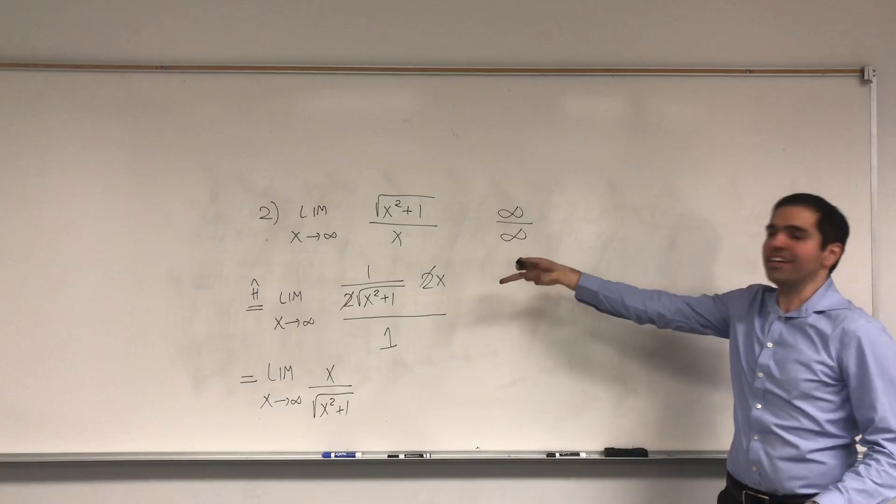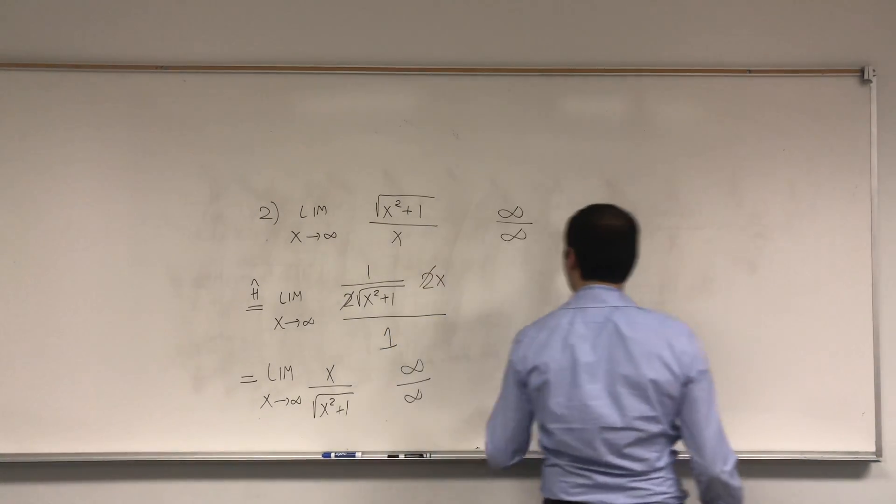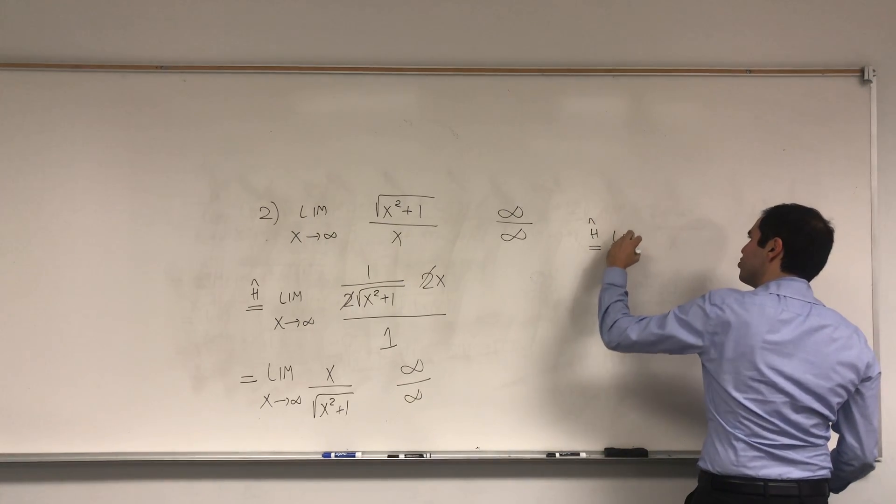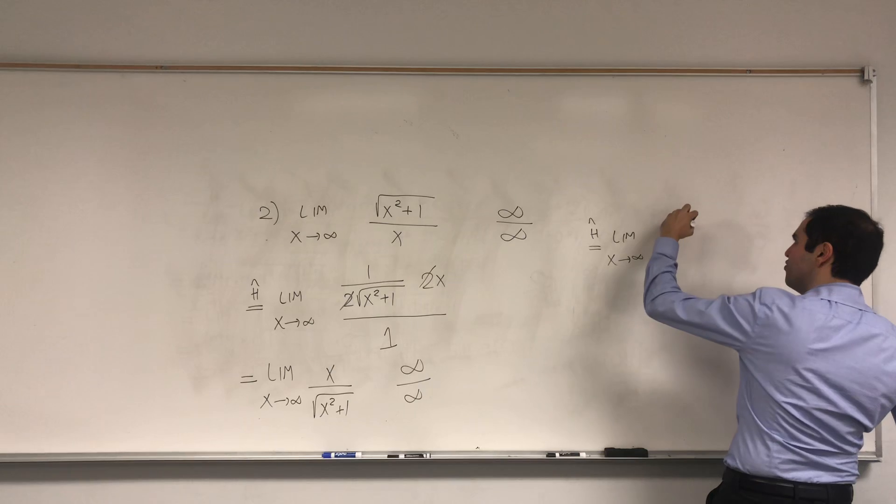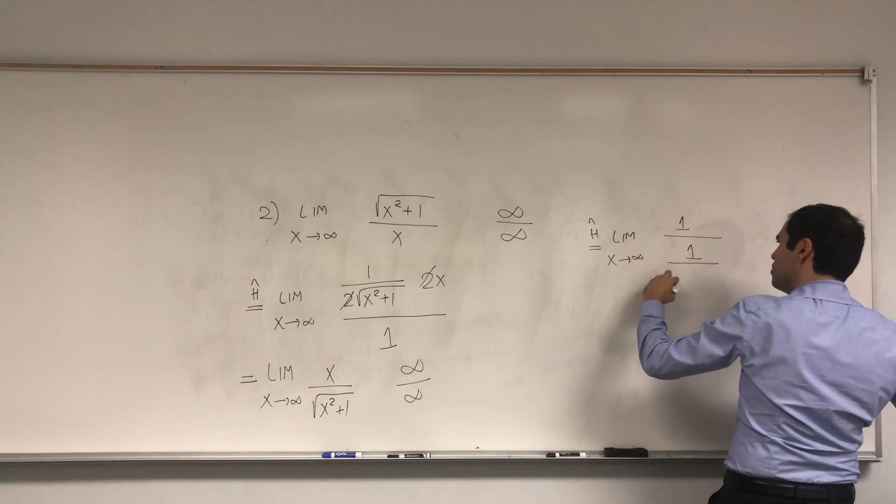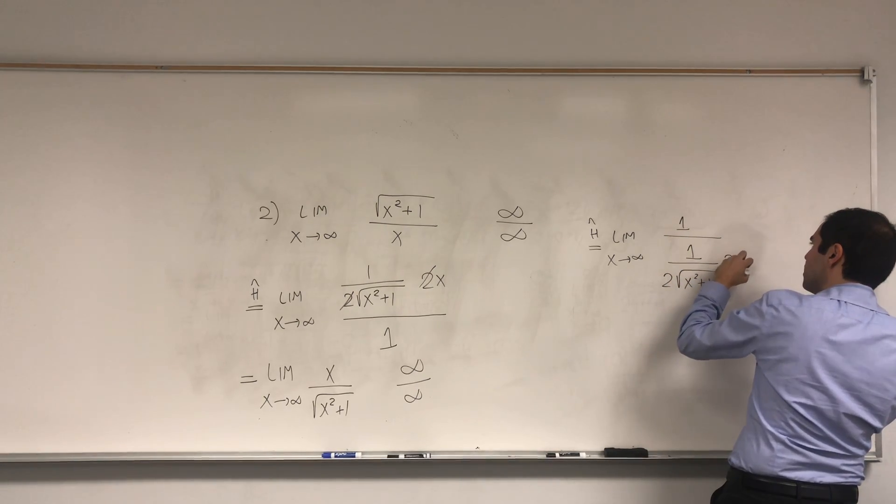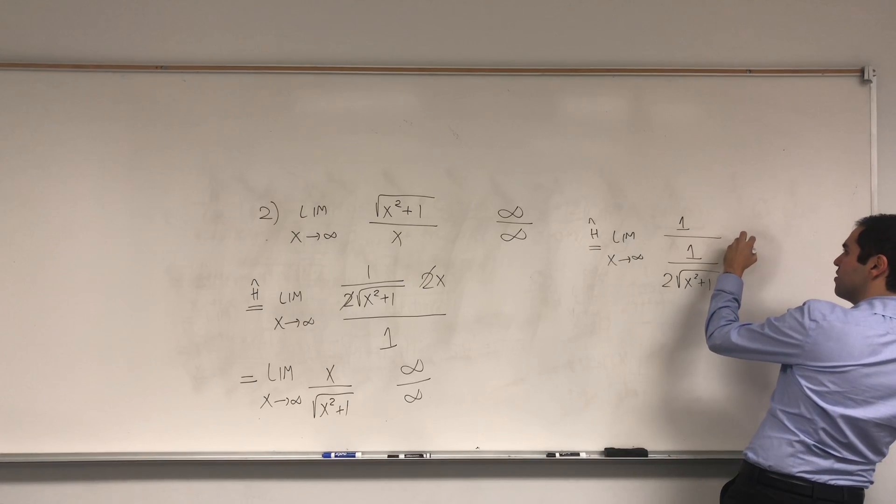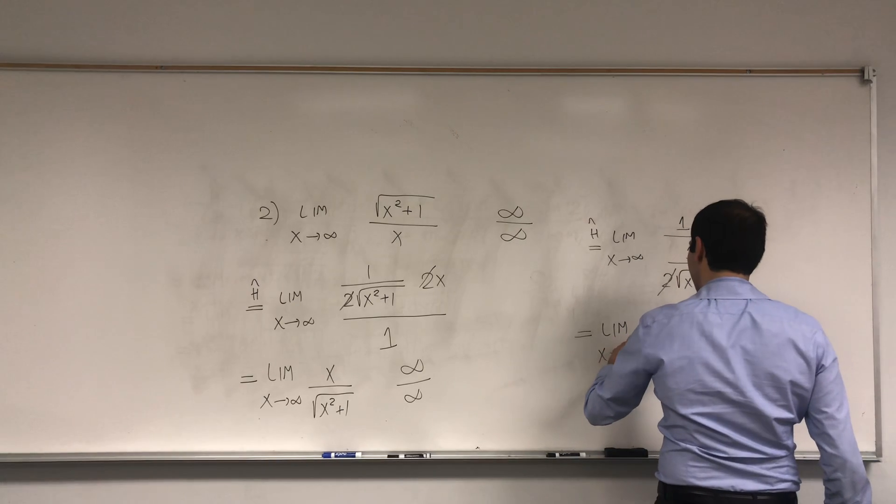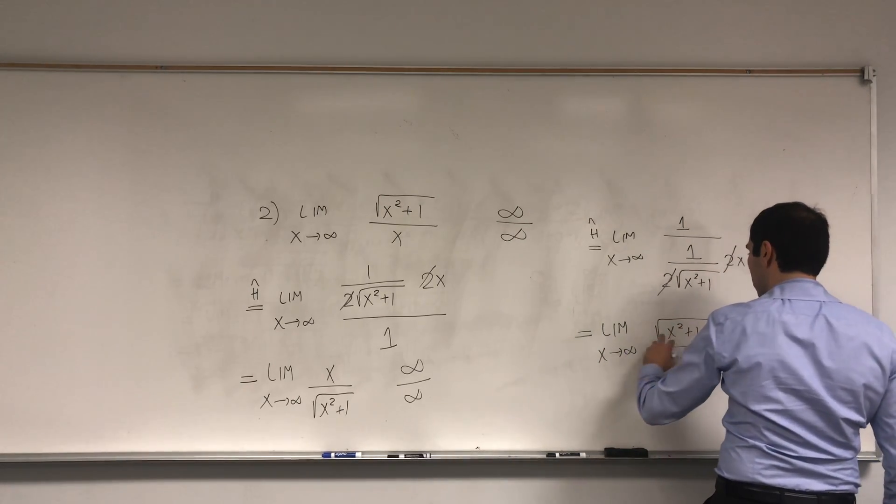Okay, weird. We get something of the same form, but let's persevere. So, this is still of the form infinity over infinity, so let's just apply L'Hopital's rule again. So, limit x goes to infinity of 1 over 1 over 2 square root of x squared plus 1 times the derivative of this, which is 2x. So, the 2's cancel out, and we get limit as x goes to infinity of square root of x squared plus 1 over x.